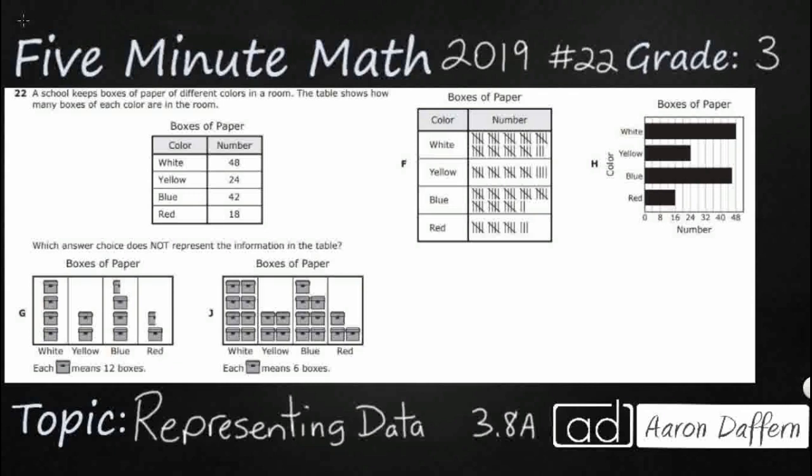So we have a pretty interesting problem here where we have the school keeps boxes based on color in a room and we need to match this table to three out of the four representations. Our correct answer is going to be the one that does not represent, so the one that does not work. And these answer selections look a little bit strange. I had to rearrange a little bit on the screen so it would fit in landscape mode. So that's why this F is over here to the right.